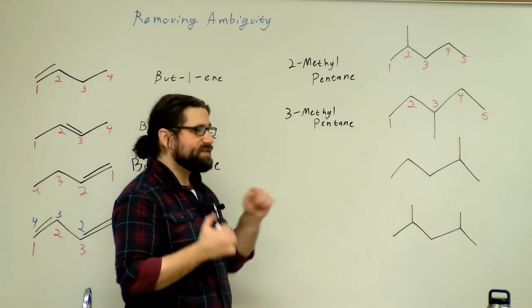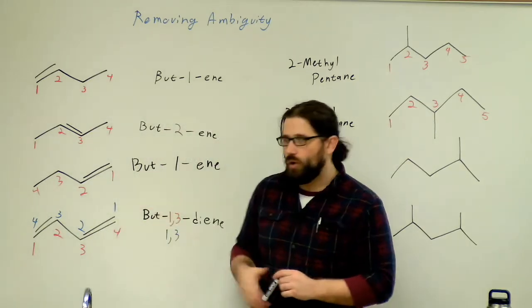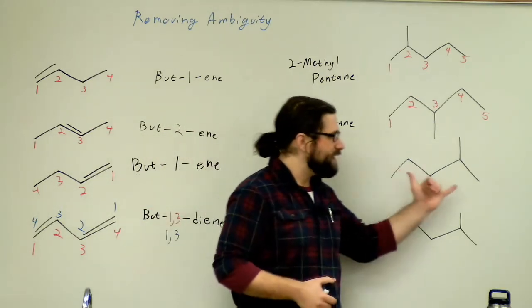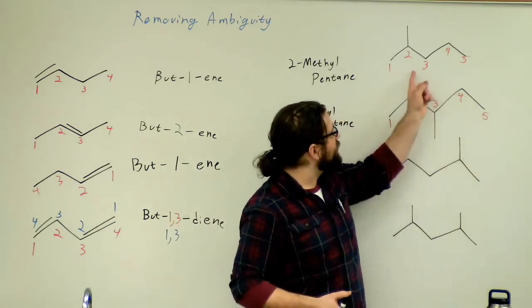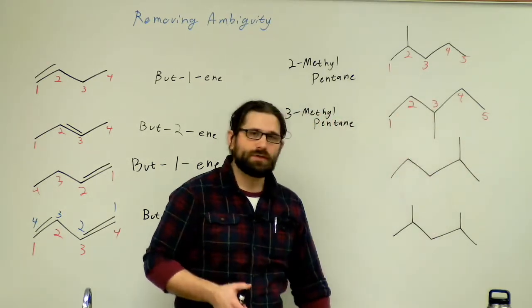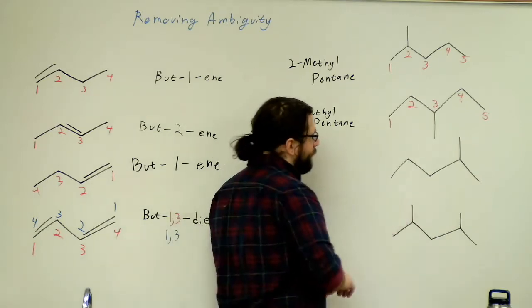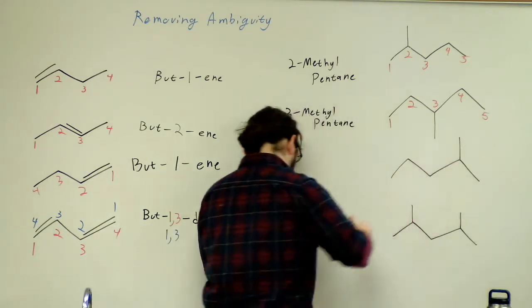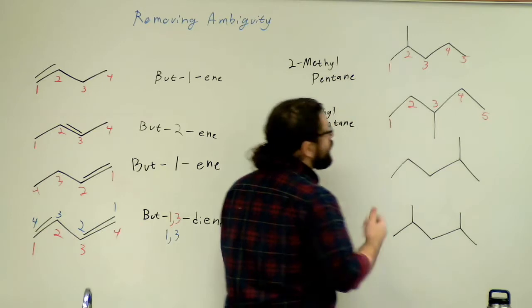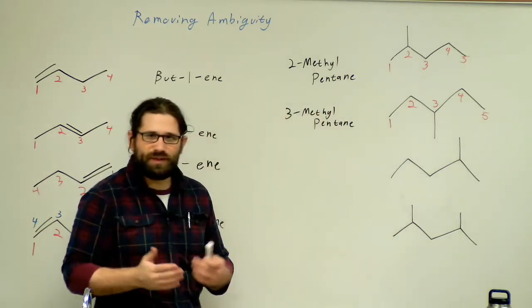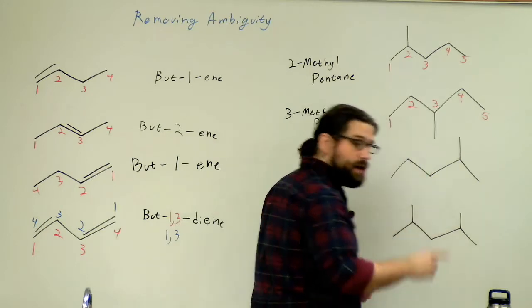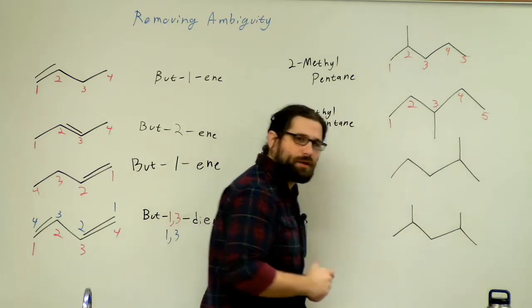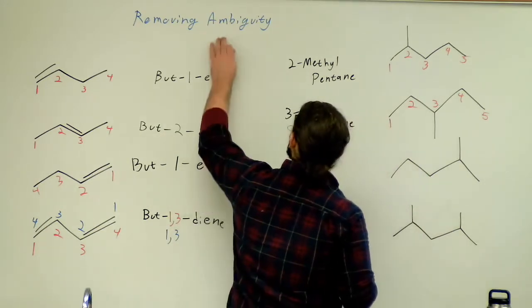Next, we have the same thing we had over here where I could just take this, I could pull it out of the board, I could flip it around, and I would have the same molecule as that one. So I actually need to number this from right to the left, giving this methyl group the lowest possible number because I don't want to have a molecule that has two names. I want to make sure each molecule has one name and each name has one molecule. That's what it means to remove that ambiguity.